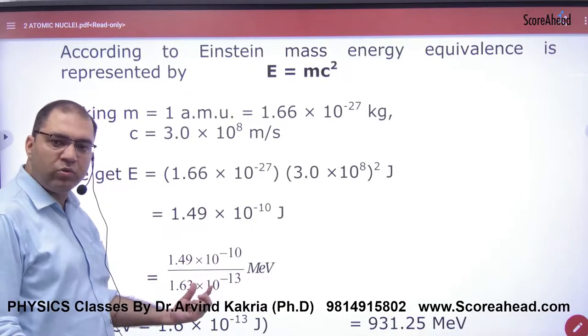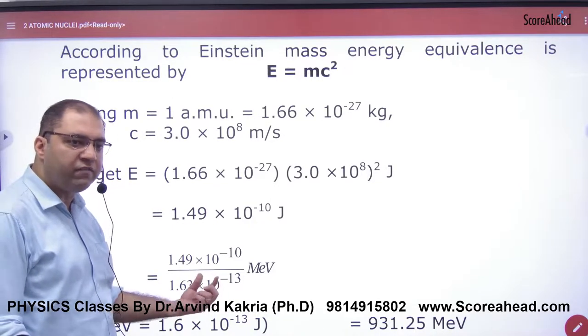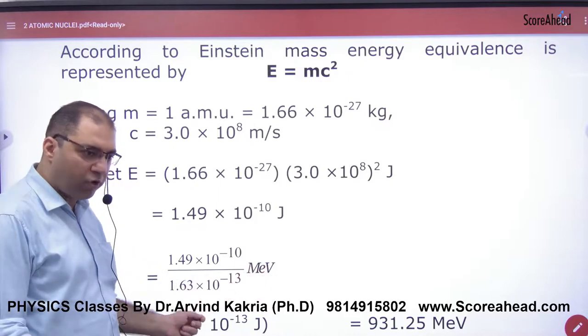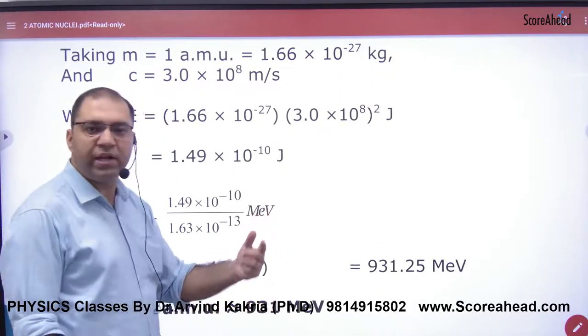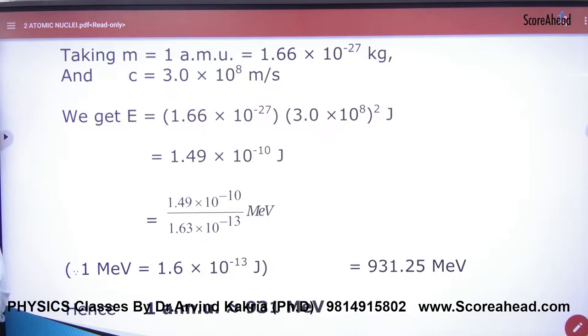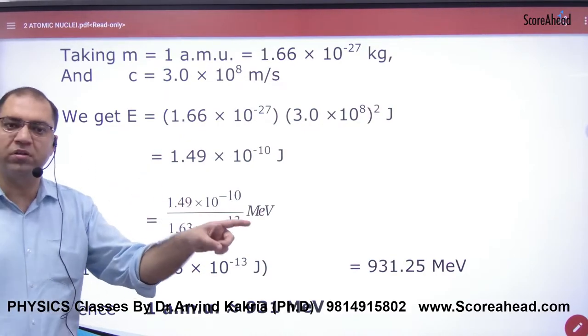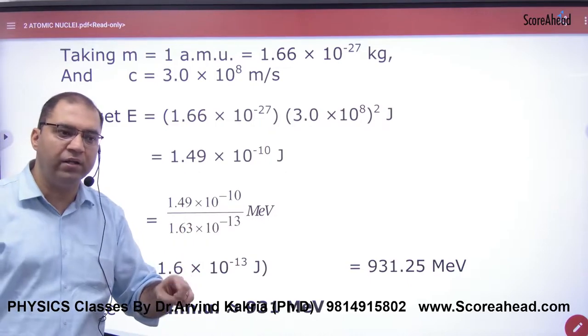from 1.6 into 10 to the minus 13, which will convert joules to mega electron volts. So the approximate answer will be 931 mega electron volts. So remember that 1 AMU is approximately equal to 931 mega electron volts.